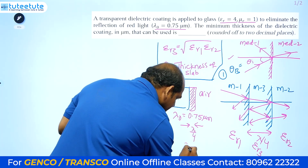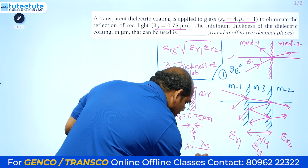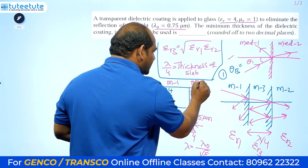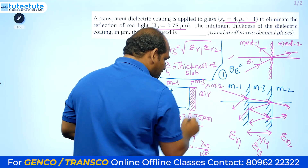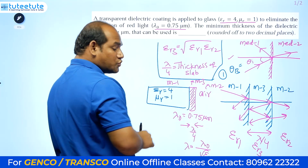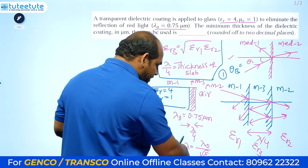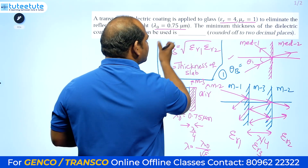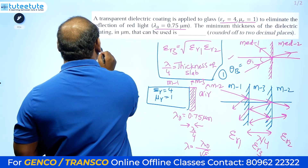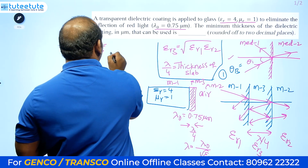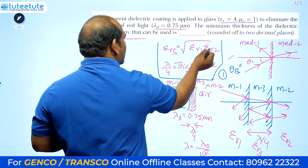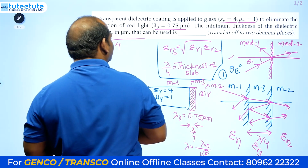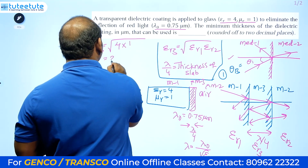Lambda is given by λ₀ divided by the square root of εr. We need to calculate εr3 first using the geometric mean rule: εr3 = √(εr1 × εr2). Here εr2 = 4 (glass) and εr1 = 1 (air, since relative permittivity of air is 1). Therefore εr3 = √(1 × 4) = 2.